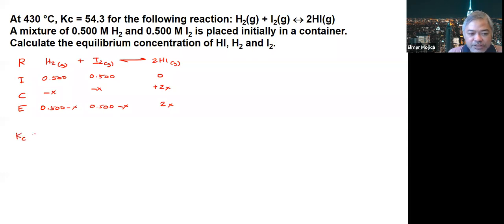Looking at the Kc expression, you have HI squared over H2 times I2, and then replace it with the expression we have here.